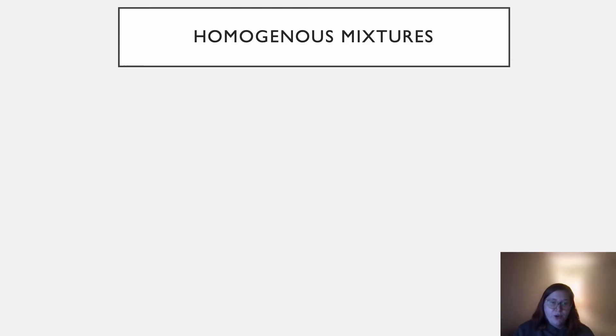So first, we have homogeneous mixtures. In a homogeneous mixture, the different parts are blended together so that it all looks the same. You can't see the different parts of a homogeneous mixture.